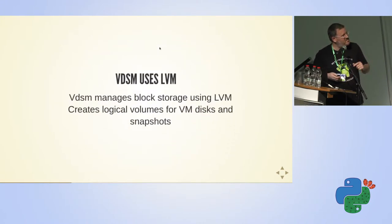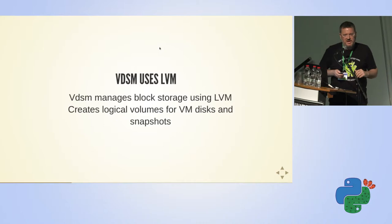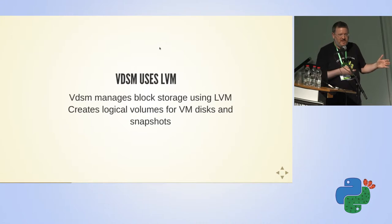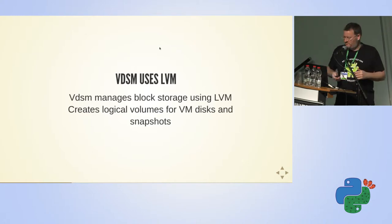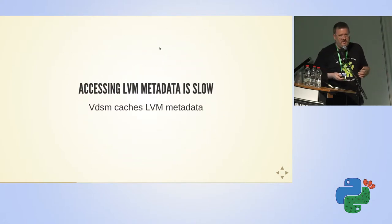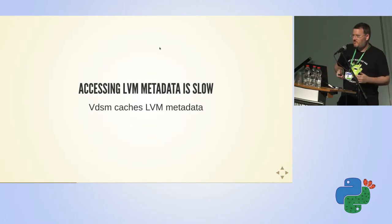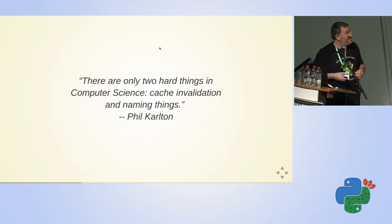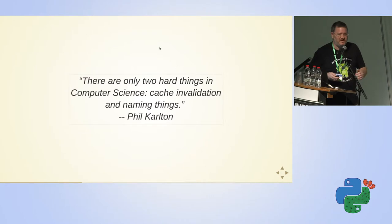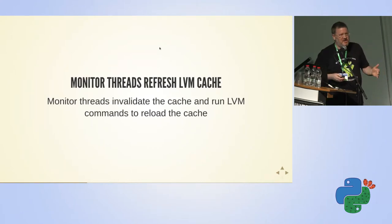VDSM is also using LVM. When we use block storage like iSCSI or Fibre Channel, we create volumes using LVM. So VDSM creates logical volumes for virtual machine disks or snapshots. Accessing LVM metadata can be slow, so VDSM caches the metadata. And when you cache stuff, life becomes tricky — you have to invalidate the cache. The solution implemented in VDSM is that the same monitor threads that monitor storage also invalidate the cache.